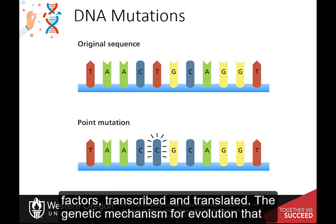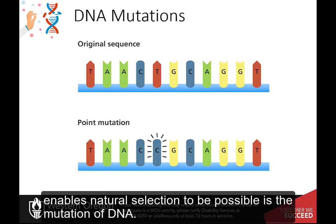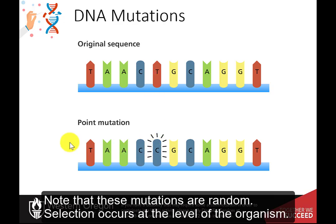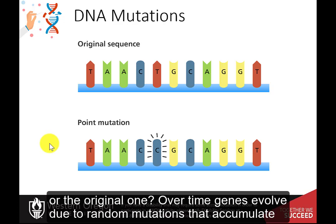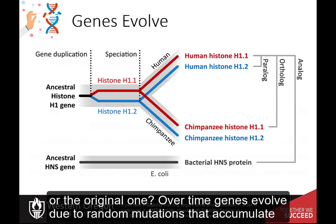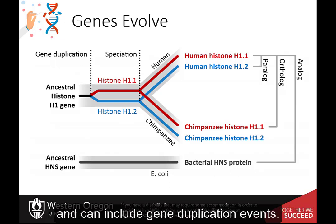The genetic mechanism for evolution that enables natural selection to be possible is the mutation of DNA. Note that these mutations are random. Selection occurs at the level of the organism — for example, does the environment favor the survival of an animal with a new mutant trait or the original one? Over time, genes evolve due to random mutations that accumulate and can include gene duplication events.